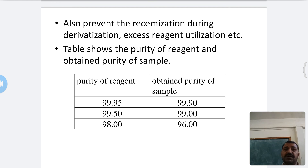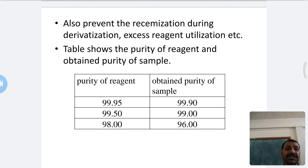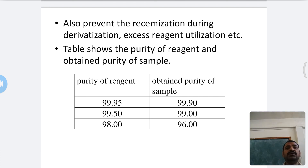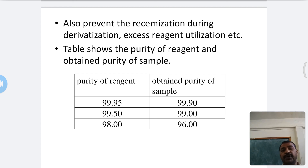In indirect separation, we use conversion to diastereomers by derivatization, and racemization must be prevented during derivatization. Excess reagent use should also be avoided. The table shows that a reagent purity of 99.95% yields an obtained sample purity of 99.90%.